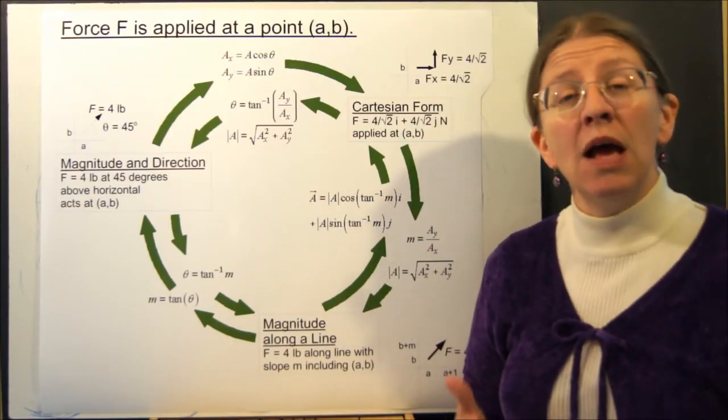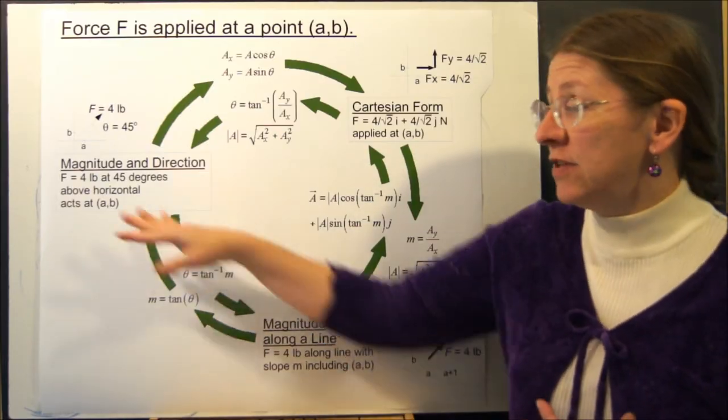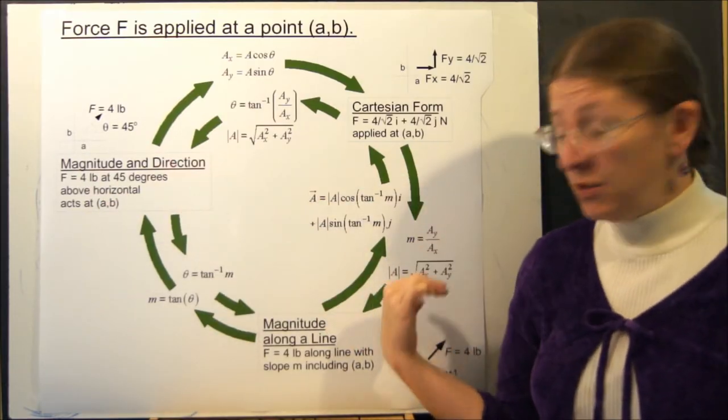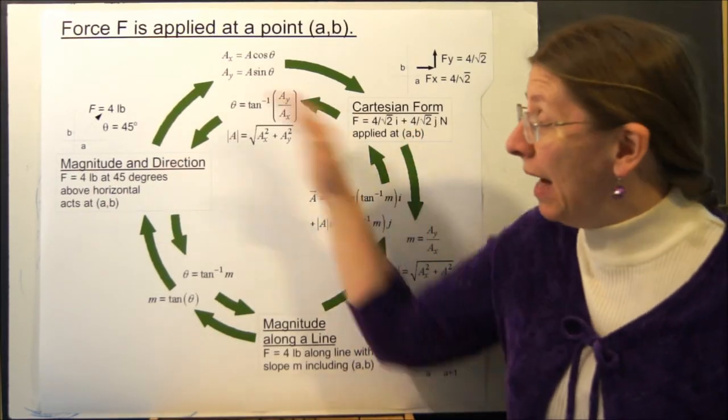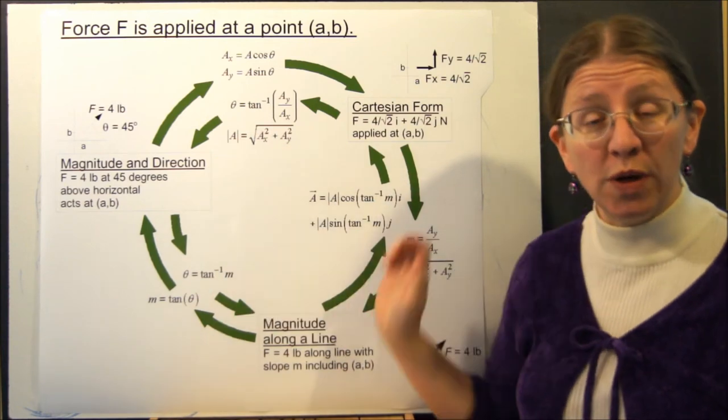You see a vector. You ask yourself, how is it given to me? Is it given to me as magnitude and direction, magnitude along a line, or Cartesian form? And how do I move from one of these to another?